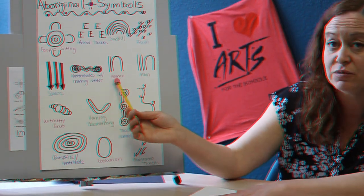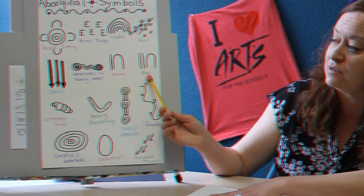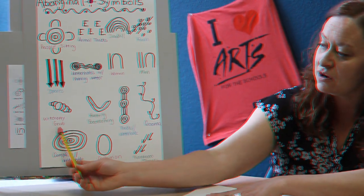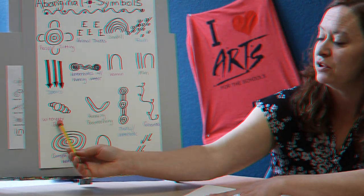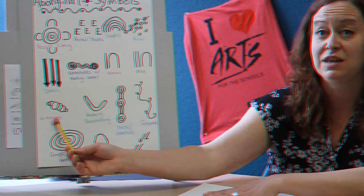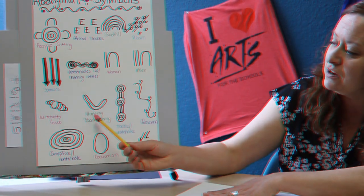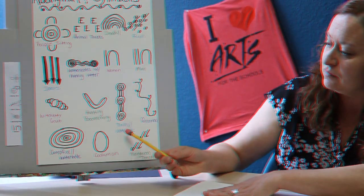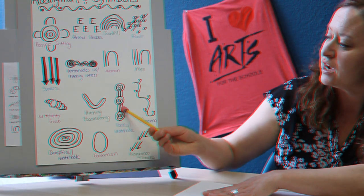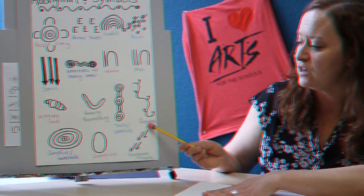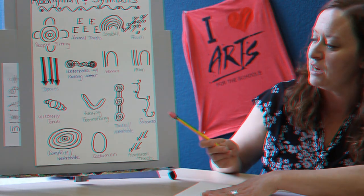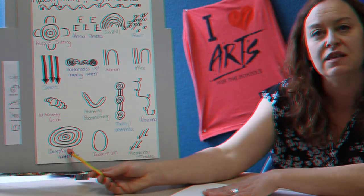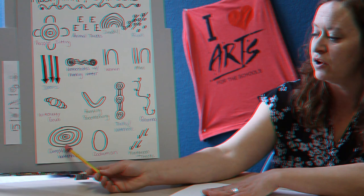This is a symbol for a woman and this is the symbol for a man. Here is a witchetty grub, which is actually a grub that the Aboriginal people eat and so do some of the animals around there. Here's a hunting boomerang, water holes with tracks between. This is a goanna, which actually shows what his track looks like when he walks along the sand. This is a campfire or a water hole.